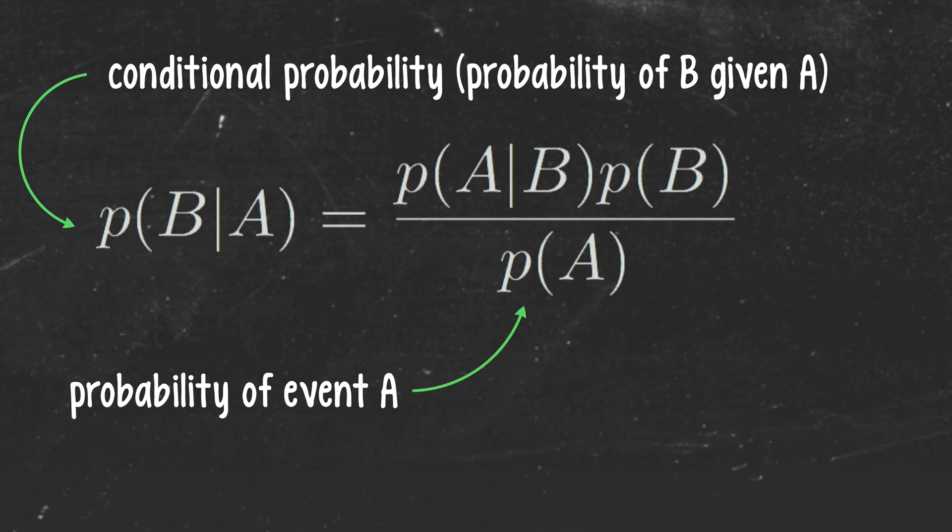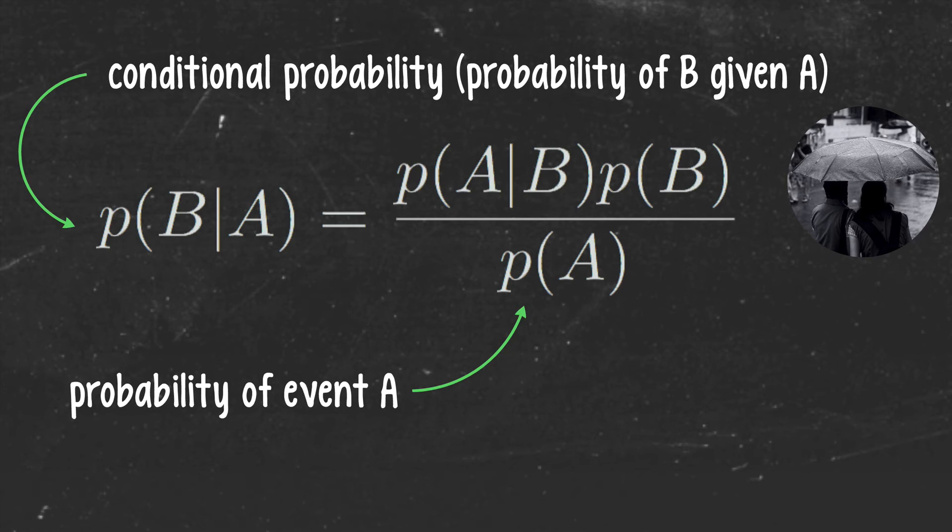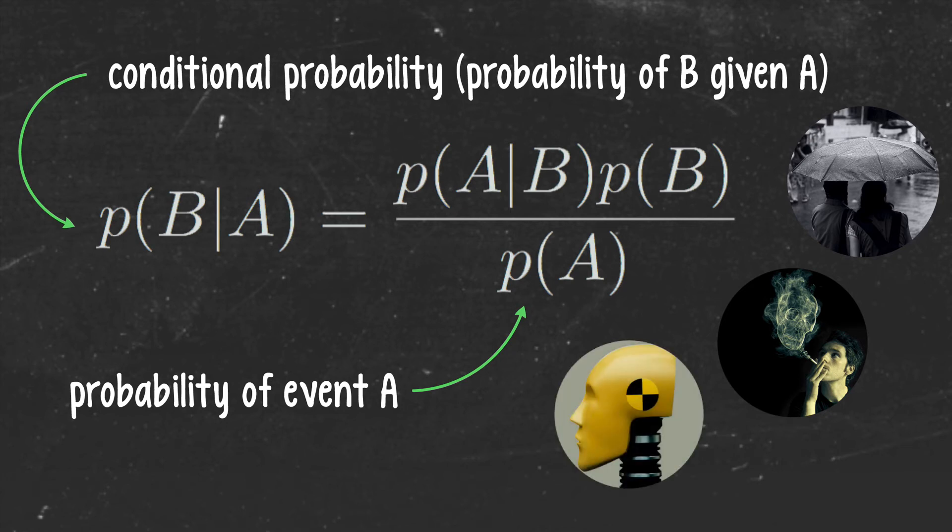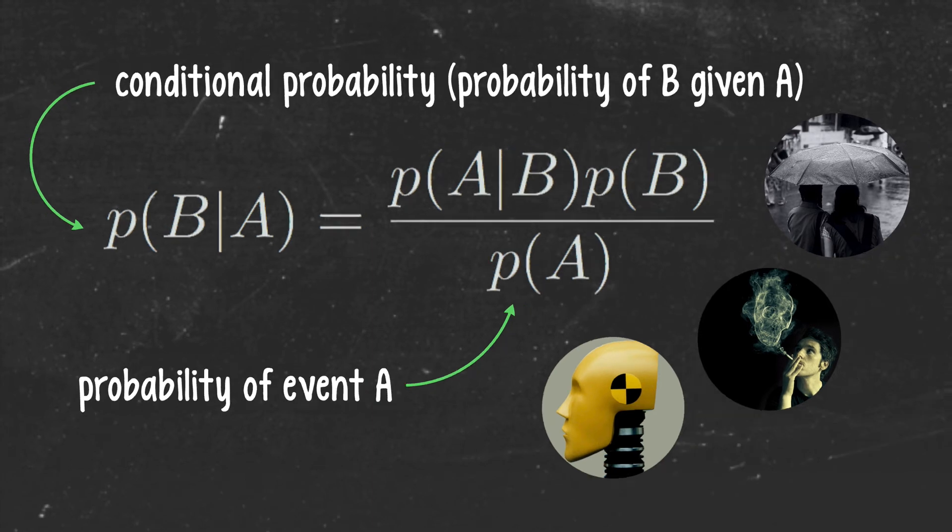This is where the weighing the evidence aspect of Bayes' theorem comes in. We now have some evidence in the form of A being true, and we can recalculate the probability of B based upon this evidence. For example, the probability that I will actually need my umbrella given that the weather forecast calls for rain, or the probability that I will live to 70 given that I smoke 20 cigarettes a day, or the probability that I will survive a car crash at 30 miles per hour if I'm wearing my seatbelt.